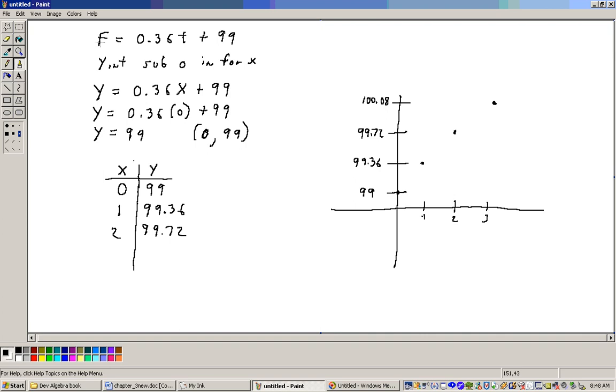let me do this. Let me replace the F with Y, because the Fahrenheit is your Y variable, the Y-axis, and T will replace T with X, so you're used to dealing with X's and Y's. So we have the equation, Y equals 0.36X plus 99.